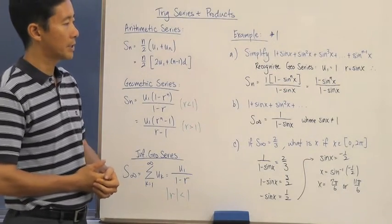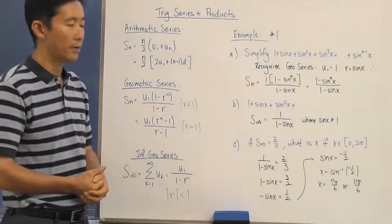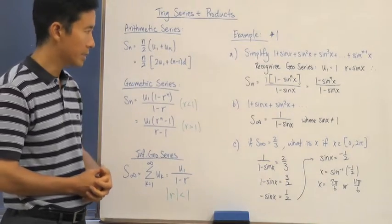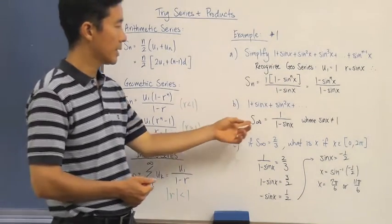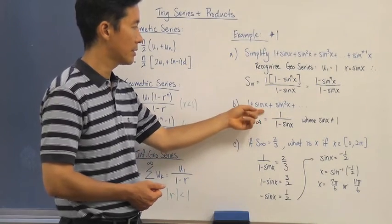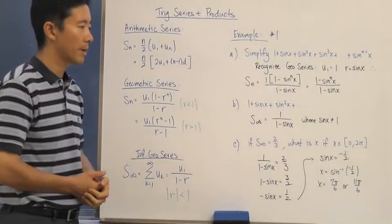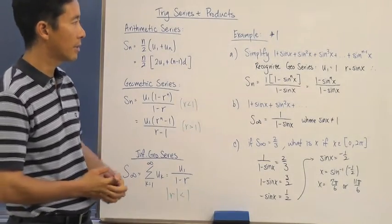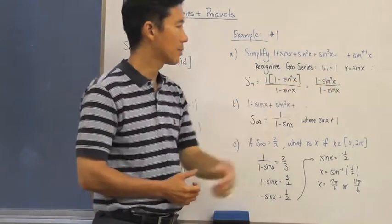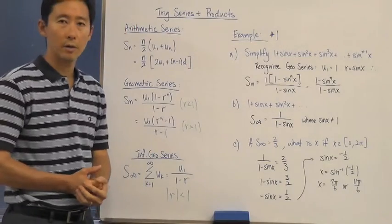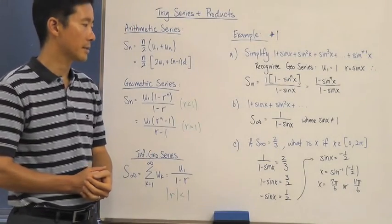Now, what if we wanted to go ahead and find the infinite geometric series of this? Well, we know that the infinite series of this particular geometric series here is just going to be 1 divided by 1 minus sine x. Again, because the u sub 1 is 1 and the r, or the common ratio, is sine x.